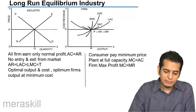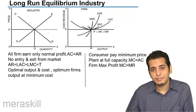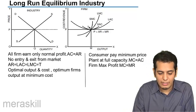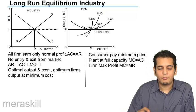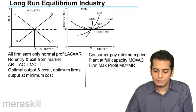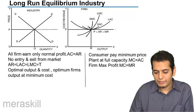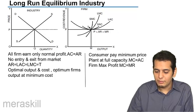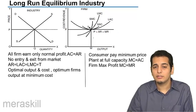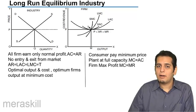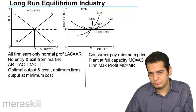We can see that we have the demand curve and the supply curve in the first graph, and thus we have the price which is set by the industry. This price has to be accepted by the firm, so it becomes the price curve, the demand curve, the average revenue curve, and the marginal revenue curve for the firm.